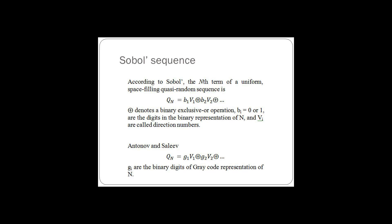See also: Low discrepancy sequences, Quasi-Monte Carlo method. Notes: Collected Algorithms of the ACM — C algorithms 647, 659, and 738. Collection of Sobol sequence generator programming codes. Freeware C++ generator of Sobol sequence: FDR 91, FDR 92, FDR 93.